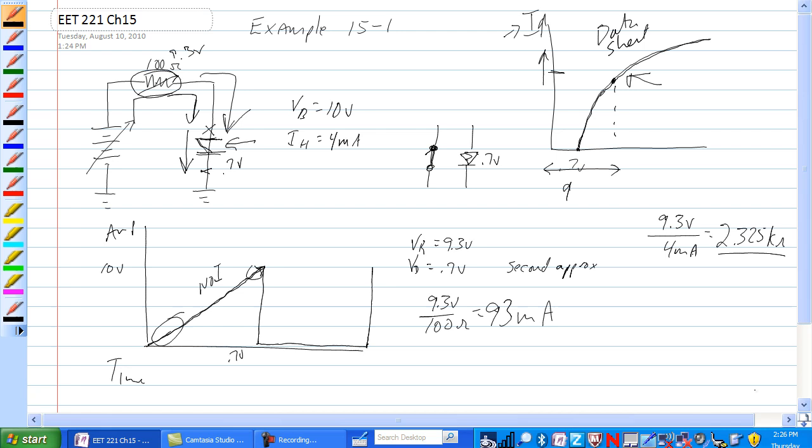Okay, so this went to 2.325 k ohms. Less than or equal to 4 milliamps, and it quit conducting, so the voltage drop across it is now the full 10 volts.